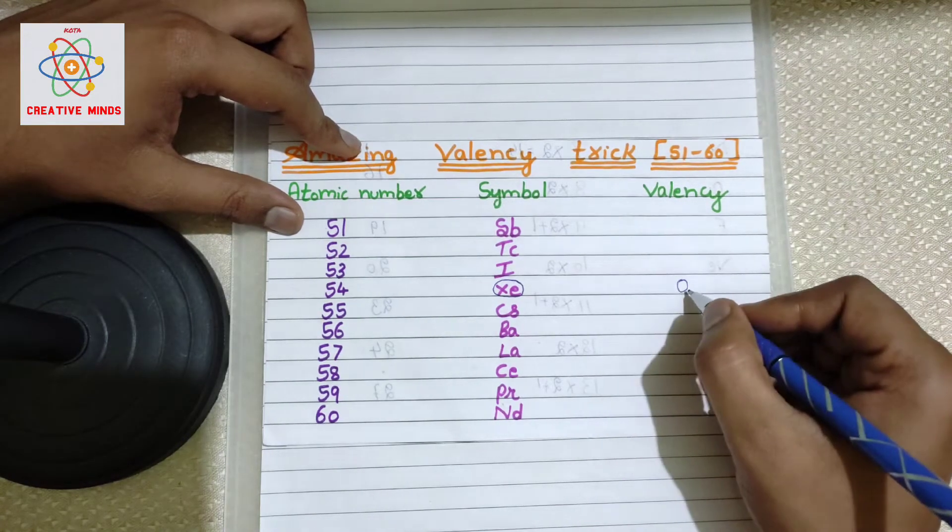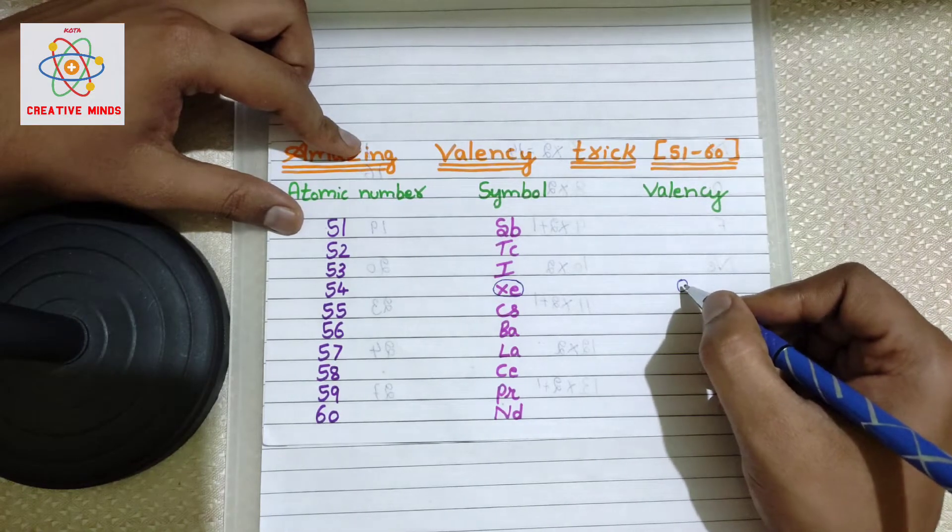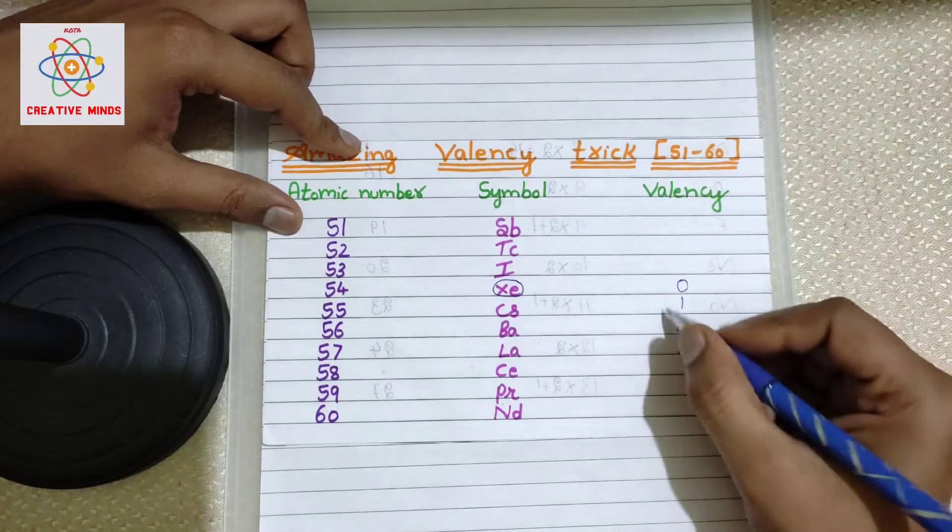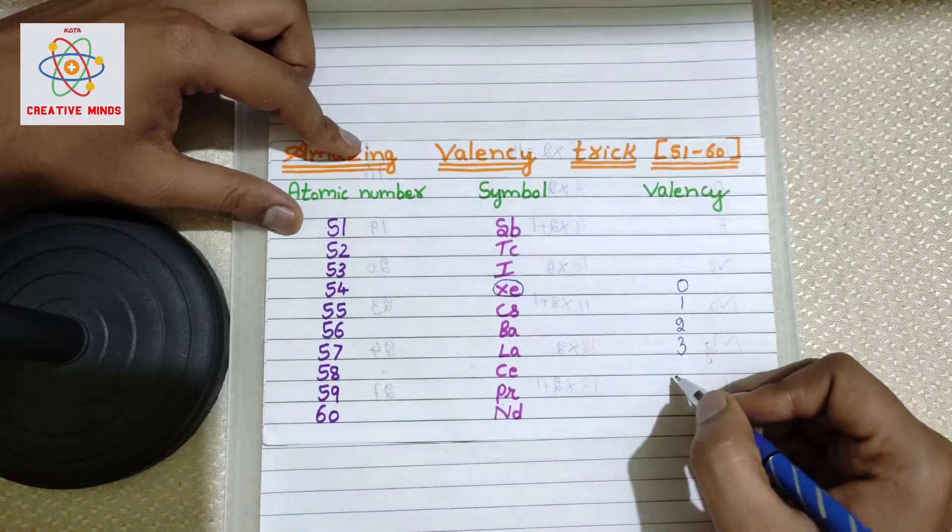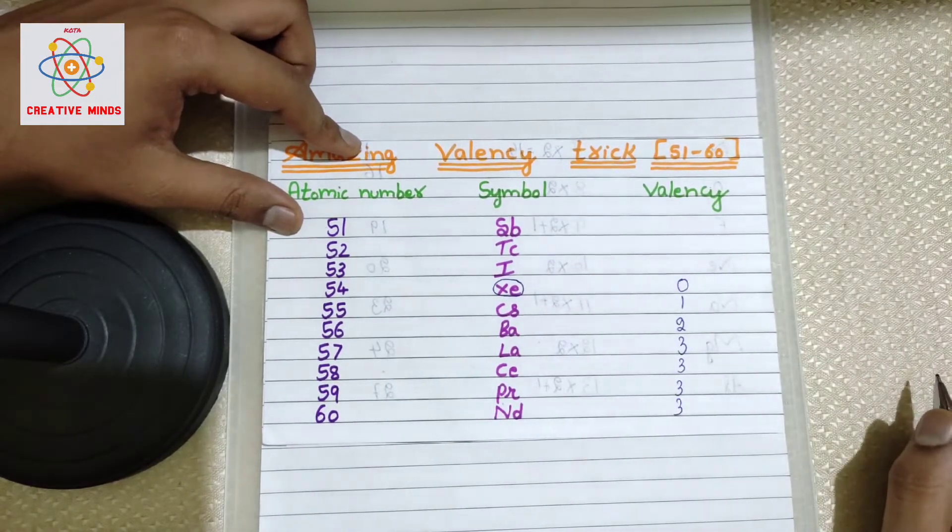Its valency will be zero. Now what we have to do: just proceed further after zero. What number do we have? One, right? So one, two, three. This is how you write the number systems. Next, after three elements, again the three elements' valences will be the same: three, three, three. That's all.